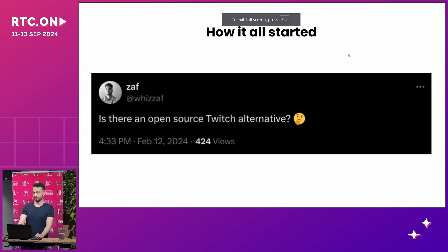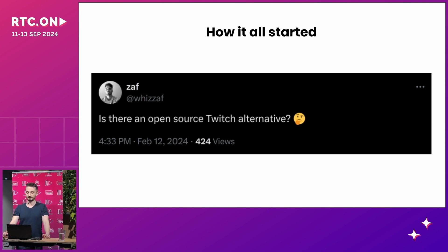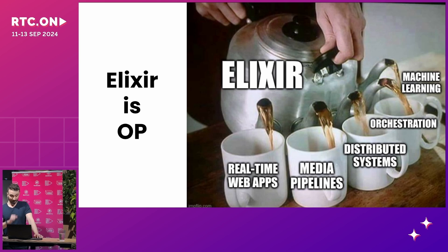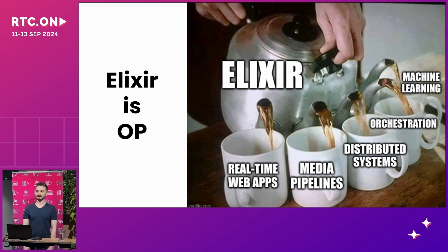We started building algora.tv earlier this year, around March. The idea was to build an open source Twitch alternative specifically designed for developers. We are a very small team of just two people — my co-founder and me — and I am the only developer. So we really needed a language and framework that makes it very easy to build and maintain this thing.